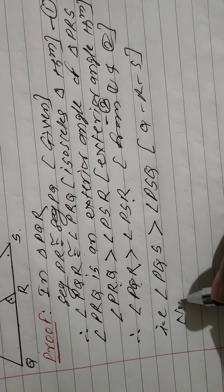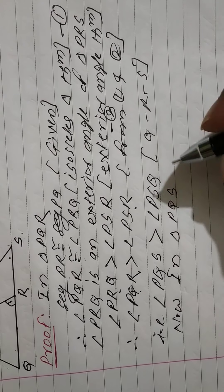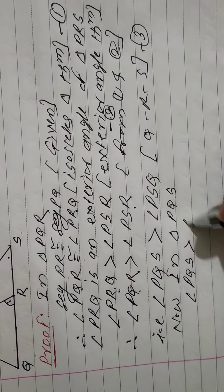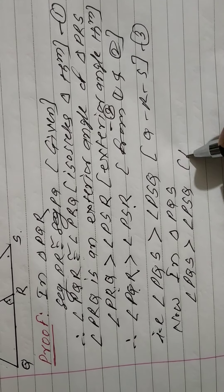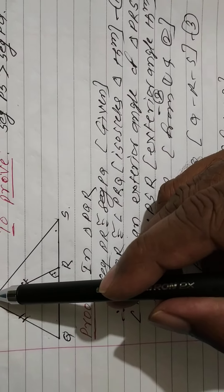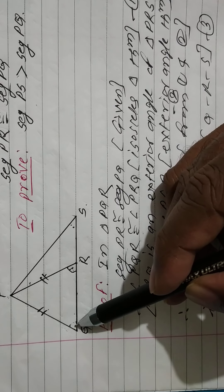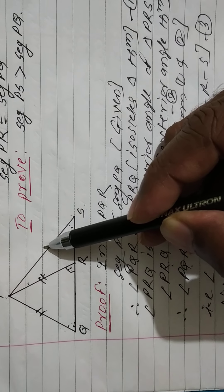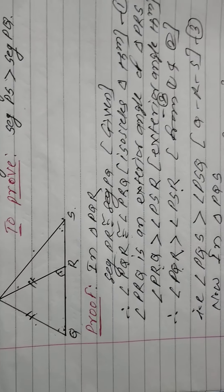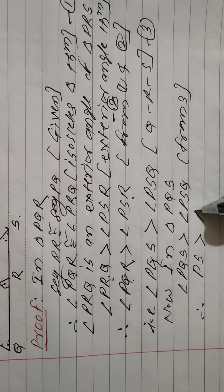Now in triangle PQS, angle PQS is greater than angle PSQ — from statement 3. In triangle PQS, angle Q is greater than angle S. Angle Q is opposite side PS, and angle S is opposite side PQ. Therefore, PS is greater than PQ.